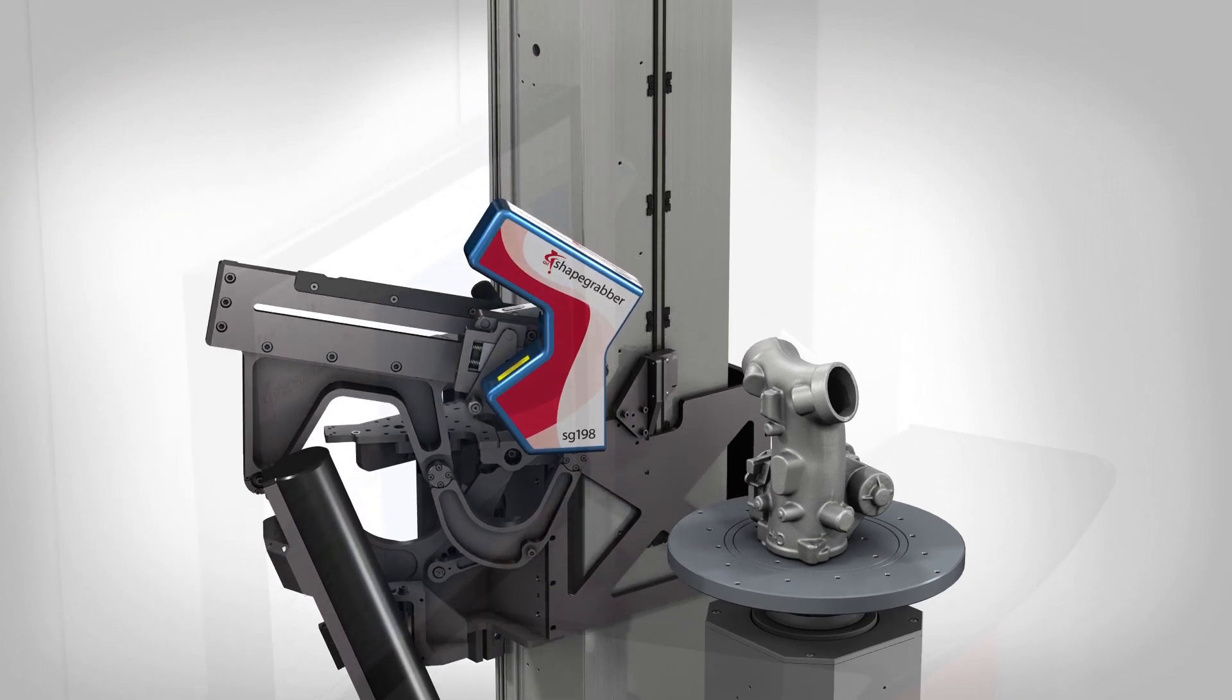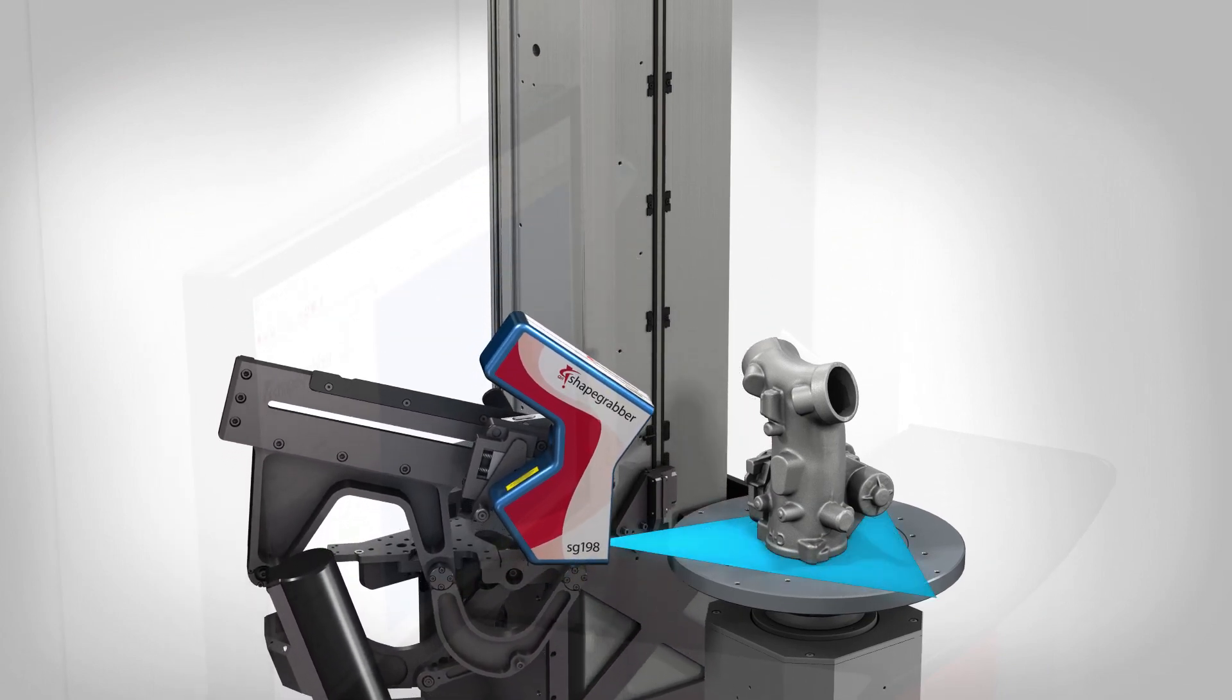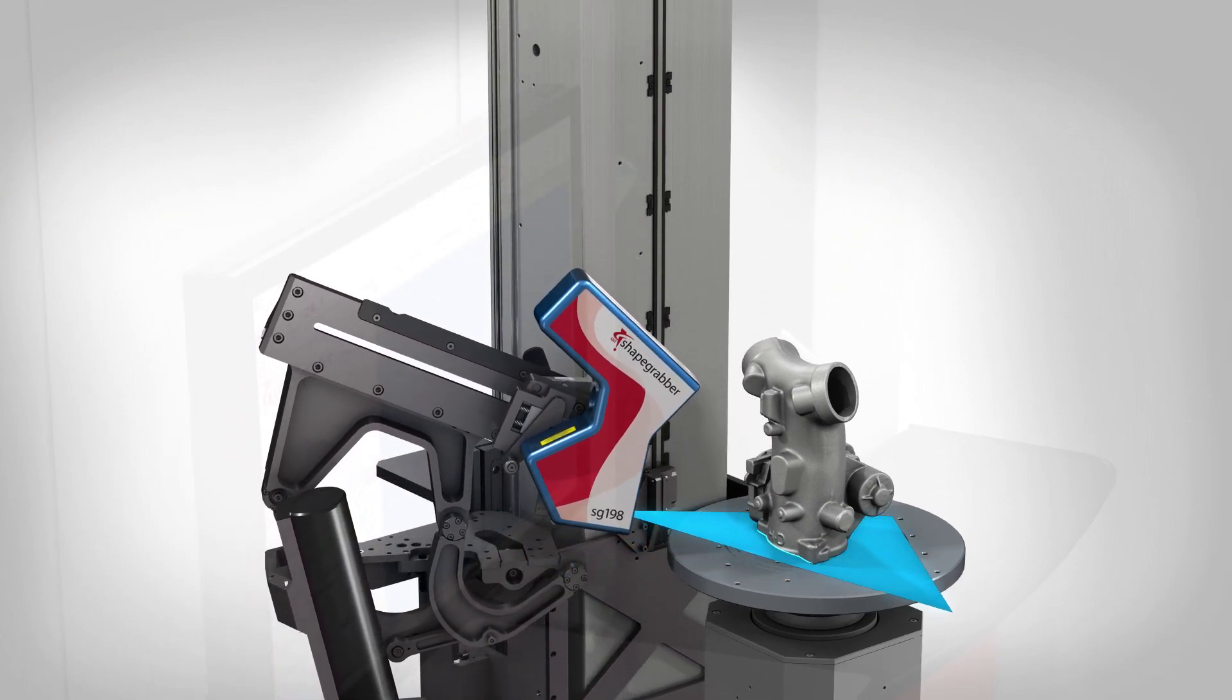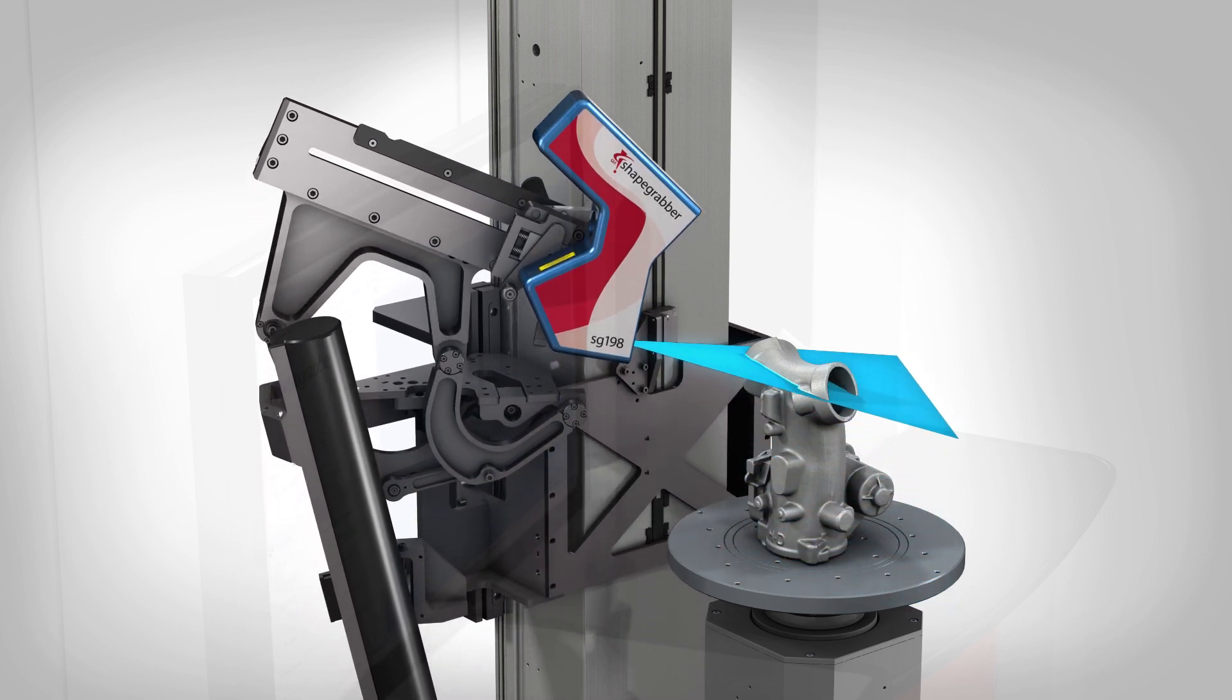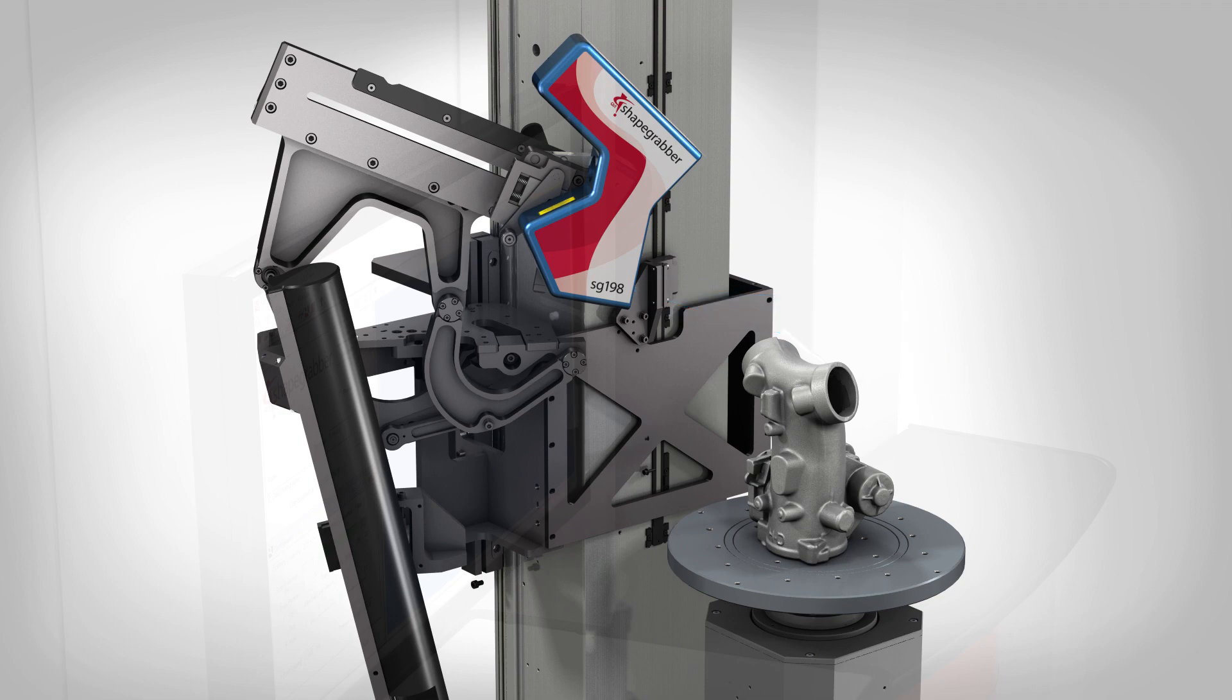The optional 25-degree tilt mechanism provides an additional look angle by automatically rotating the scan head, resulting in faster, more complete part coverage without manually reorienting the part.